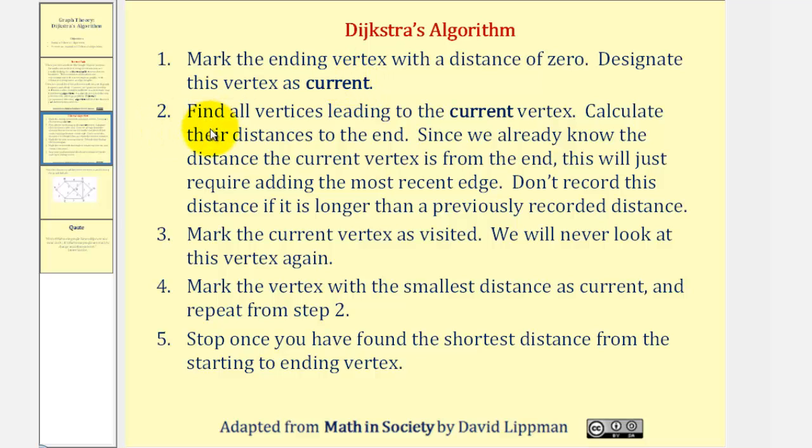Two, we'll find all the vertices leading to the current vertex. Calculate their distances to the end. Since we already know the distance the current vertex is from the end, this will just require adding the most recent edge. We don't record this distance if it is longer than a previous recorded distance.